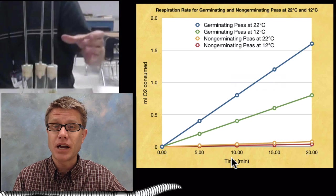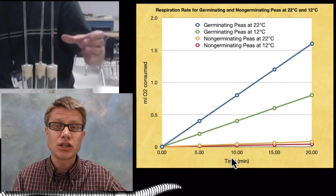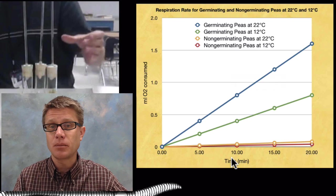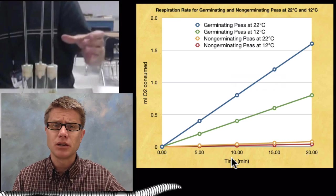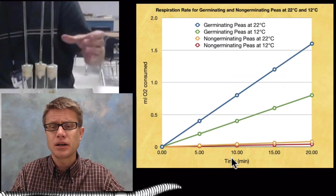In the worms, what we found is since they're ectotherms, their respiration rate is going to change as we vary the temperature. The worms at a warmer temperature are going to respire faster. Remember you're an endotherm, so it's going to be a little different because you maintain a constant body temperature.